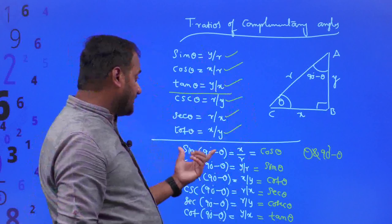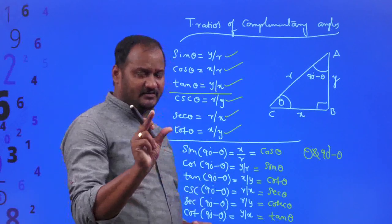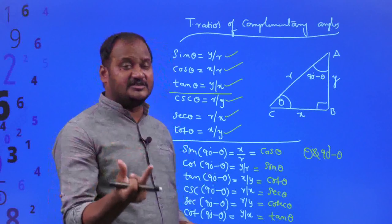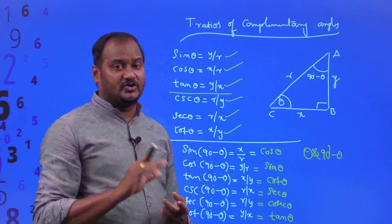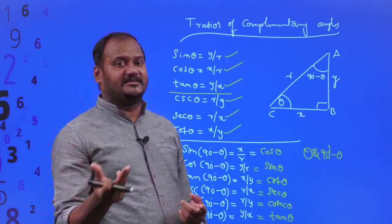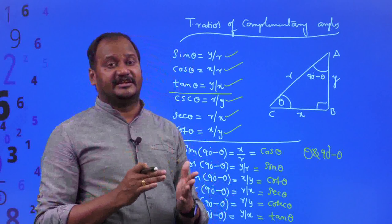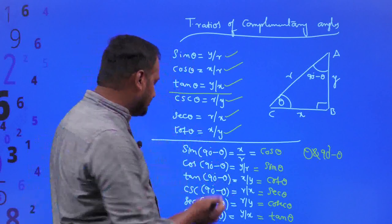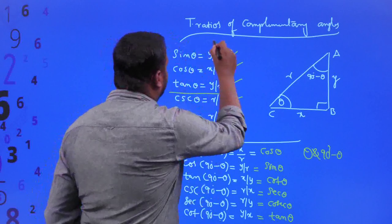To summarize: sin of 90° minus theta converts to cosine. Cos converts to sine. Tan converts to cot. Cot converts to tan. Cosecant converts to secant. Secant converts to cosecant. These are the trigonometric ratios of complementary angles.